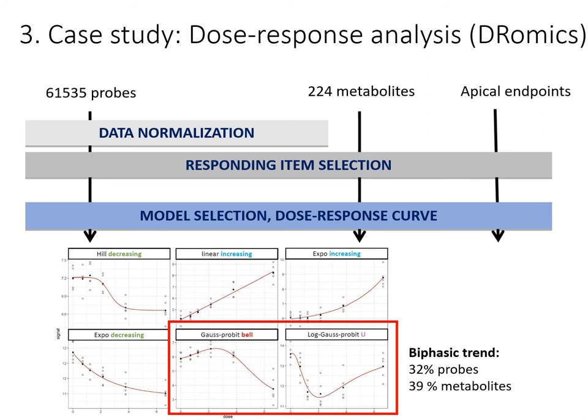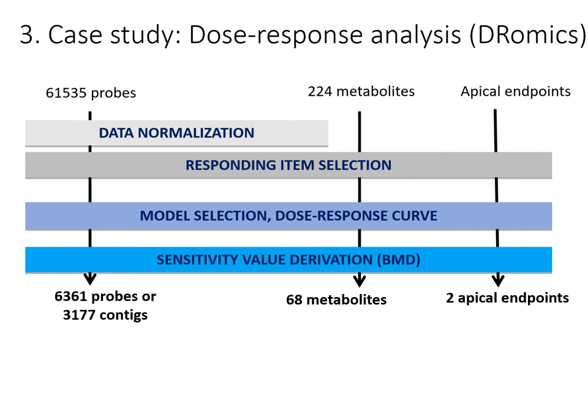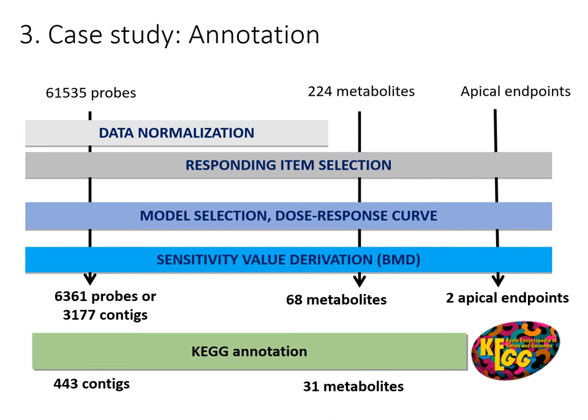Finally, the tool derived a sensitivity value — a BMD — for 6,361 probes, 68 metabolites, and the 2 apical endpoints. Because several probes from this microarray were related to the same gene, we decided to work at the gene level. This step was made outside of DROMIX; DROMIX only handled the previous steps. Annotation was done using a classical bioinformatics pipeline, and it was possible to get a KEGG annotation for 443 genes and 31 metabolites.